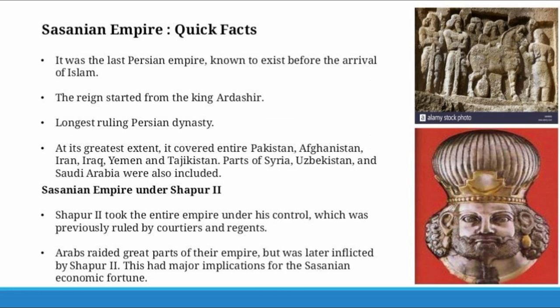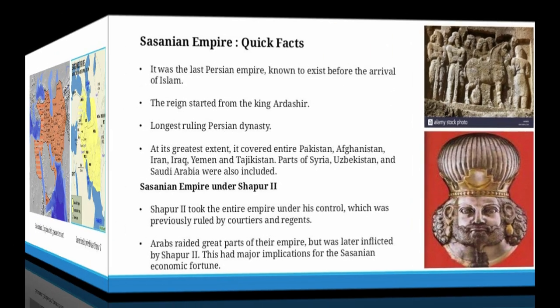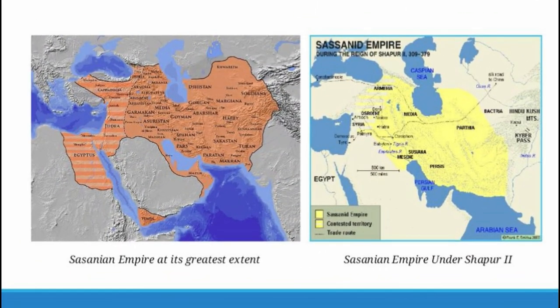The Sasanian Empire was the longest ruling as well as the last Persian Empire known to exist. Established by Ardashir, the Persian Empire came to an end upon the arrival of Islam, when most of its cities were absorbed by the Islamic caliphate. Under Shahpur II, this empire saw a shift of power from the courtiers to the king and many Arab invasions taking place in its territories.